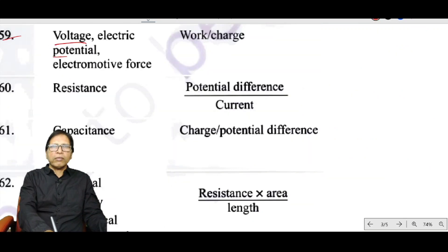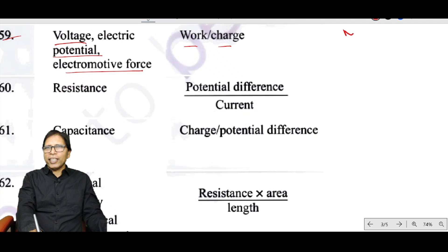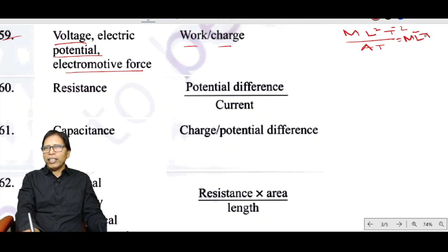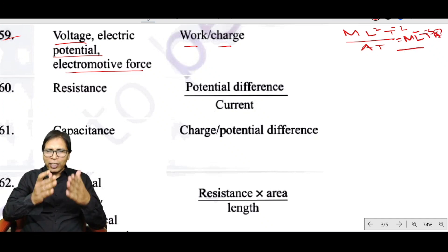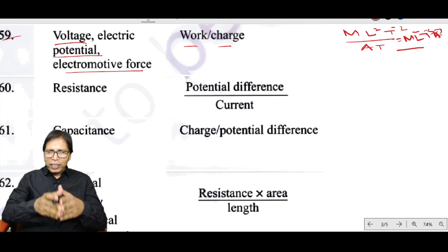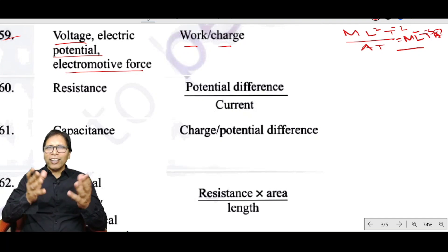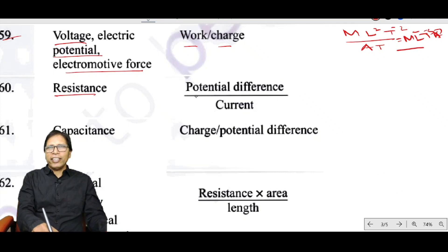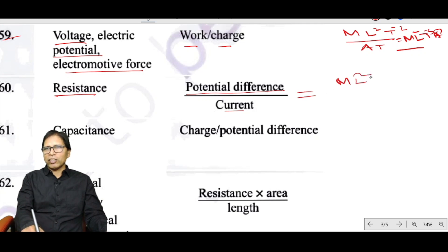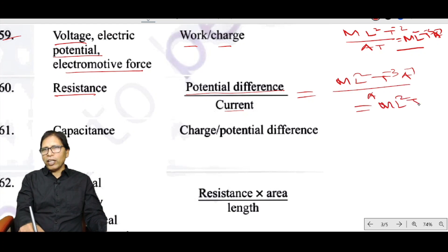Voltage, electric potential, and electromotive force all equal work divided by charge: ML²T⁻² ÷ AT = ML²T⁻³A⁻¹. Resistance equals potential difference divided by current: ML²T⁻³A⁻¹ ÷ A = ML²T⁻³A⁻².